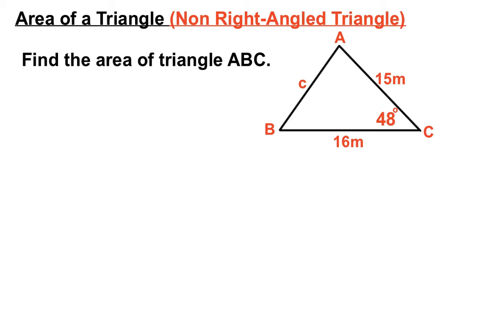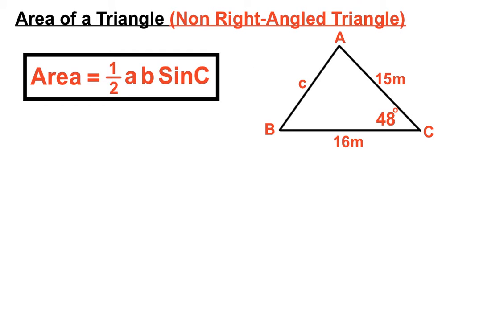Here is an example. We have two sides and an angle that's in between those two sides, so this should work quite well. Find the area of triangle ABC. Our formula is: area equals half a b sine c.